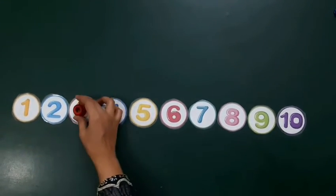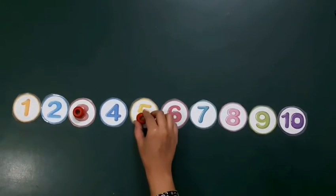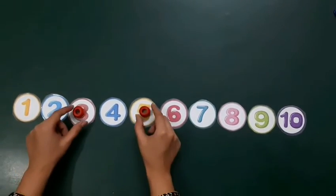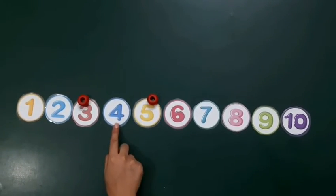Now there are numbers 3 and 5. Which number is between them? It is 4.